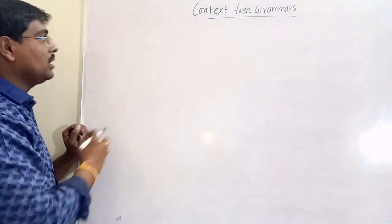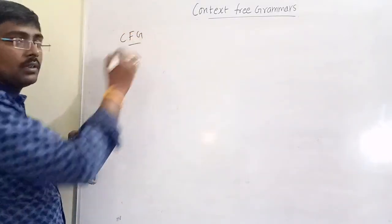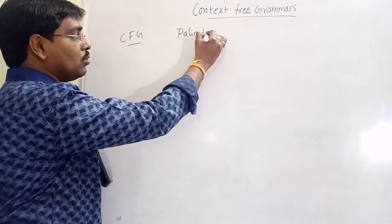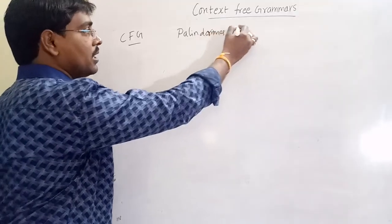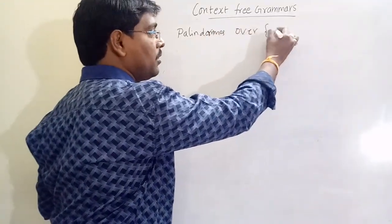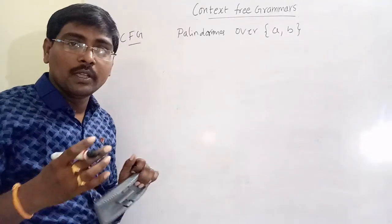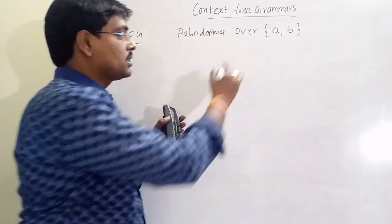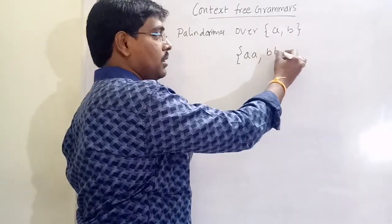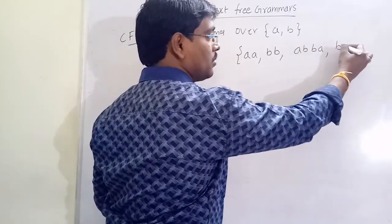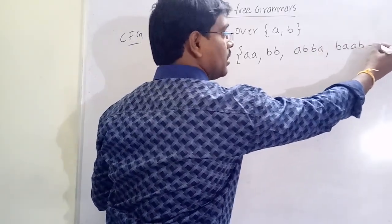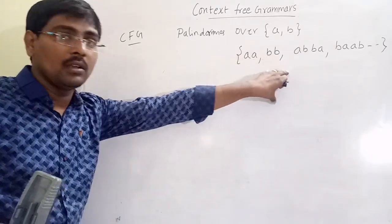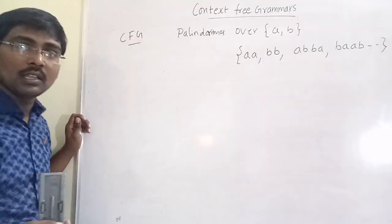Now, construct a context-free grammar to generate palindromes over the alphabets A and B. Some examples of palindromes are: A, B, ABBA, BAAB, and so on. To generate these types of palindromes, we have to construct the context-free grammar.